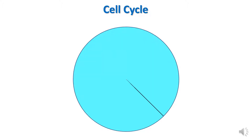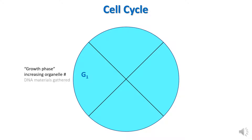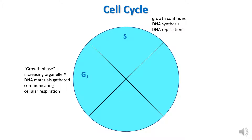The cell cycle has four phases. The first phase is called G1, and what's happening in this phase is growth. The cell has just divided and is in the process of rebuilding organelles, gathering resources, communicating with the cells around it, and conducting cellular respiration. The next phase the cell undergoes is the S stage, and in this phase we see a continuation of growth, but now the cell's DNA is getting ready to replicate, and in fact it does replicate. This is a cell gearing up to reproduce.